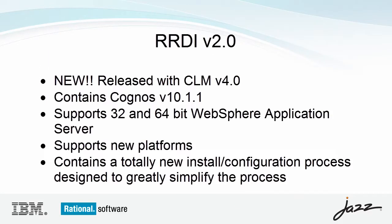What we'll be showing here today is version two of RRDI, which is brand new. It's being released with the new CLM 4.0 versions. It contains Cognos 10.1.1, which is the current release of Cognos. It supports both 32- and 64-bit WebSphere — an improvement over the previous release which was only 32-bit. It supports new platforms, including later versions of Red Hat, SUSE, and AIX, and a new database platform from Microsoft: SQL Server 2008 R2. We'll be focusing on a totally new install and configuration process, designed to greatly simplify what it takes to get the system up and running.